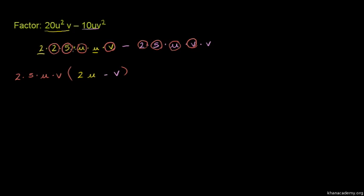So our expression becomes: 10uv times the quantity (2u minus v). This is the factored form of the expression.